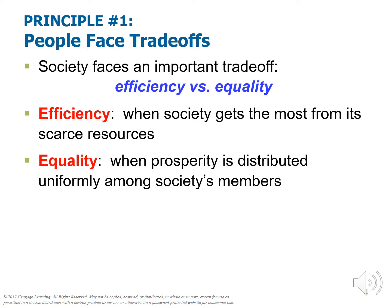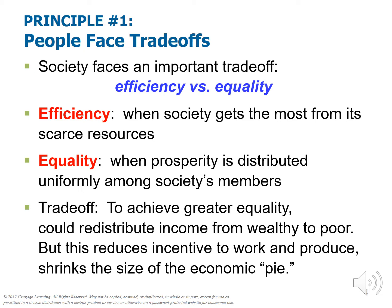There's a trade-off between efficiency and equality. Think about how hard you would work on an exam if you knew that no matter what, you'd earn the same grade as everyone else. Would you strive extremely hard to get an A-plus if you knew you'd probably end up with a C-plus? Oftentimes, moving in the direction of equality reduces the incentives that generate efficiency. To achieve greater equality, we could redistribute income from wealthy to poor, but this reduces the incentive to work and produce, and shrinks the size of the economic pie in general.